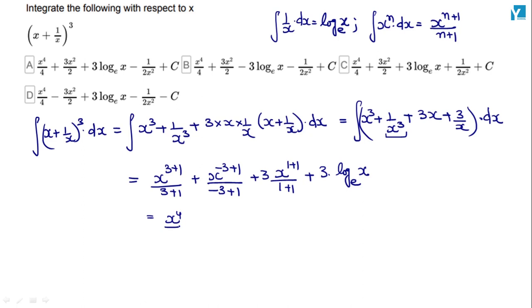So we can write down x raised to power 4 by 4 minus 1 by 2x² plus 3 log x with base e.